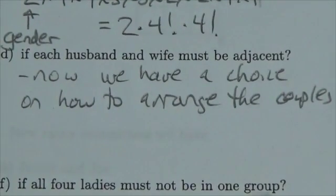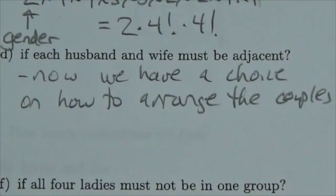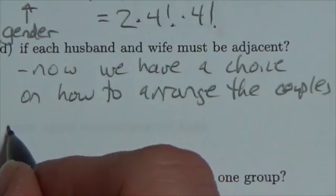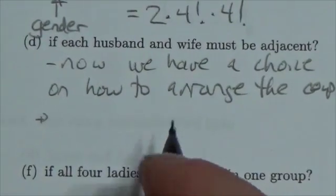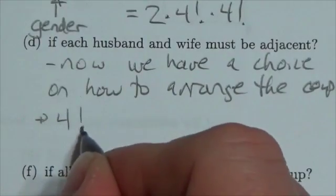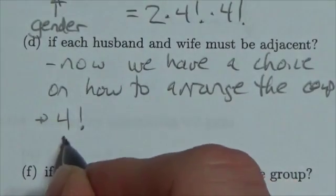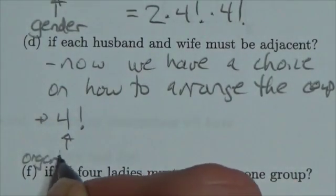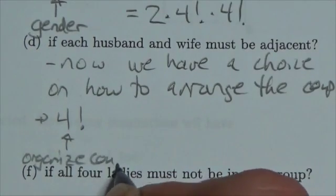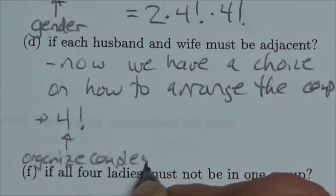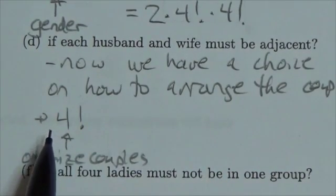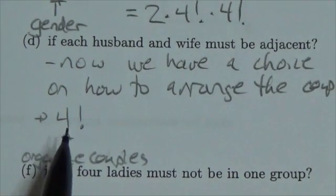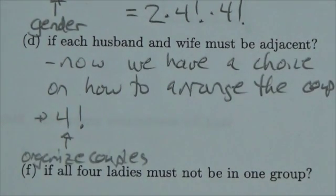So what's going to happen here is you've got to think of it like this: there are four factorial ways to organize the couples — to organize all of the couples. Think of this as what order the whites, blacks, browns, and greens stand in. There are four factorial ways to do that.